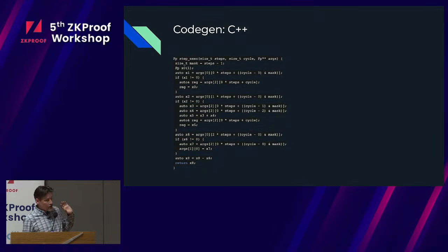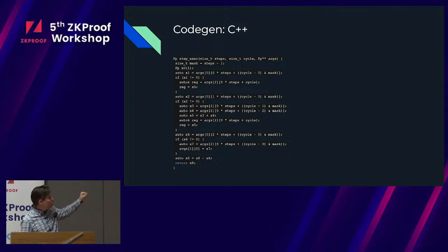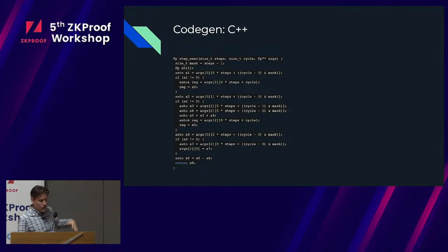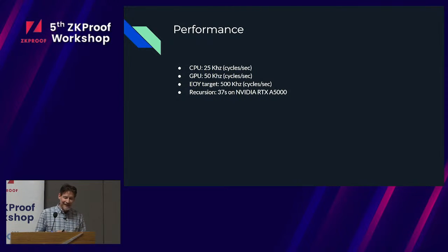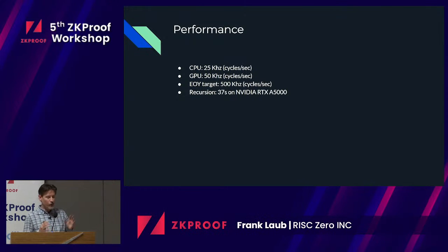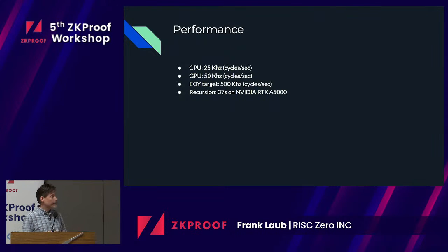Here's an example of generating some C++ code — this is the step execution function. You pass in a cycle, and this will actually run the machine one cycle's worth. The idea is you call this for every cycle you want to run. Our performance — as somebody else said earlier — is like a 70s computer. It runs at 25 kilohertz today on a CPU and up to 550 kilohertz on a GPU. We do have an end-of-year target, perhaps early next year, of 500 kilohertz — we think we can get about a 10x improvement because there are lots of opportunities for parallelization.